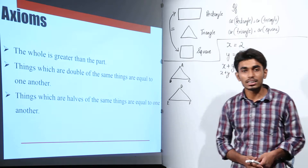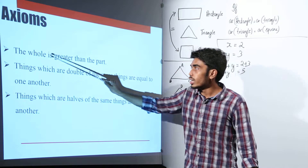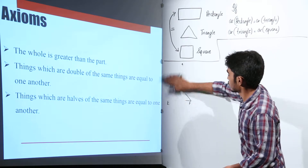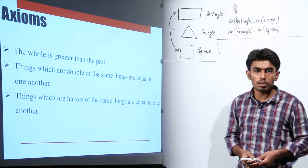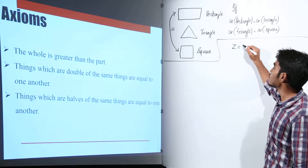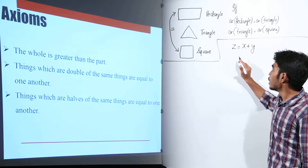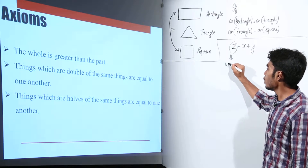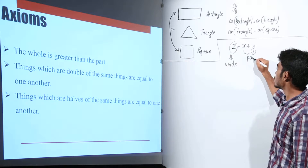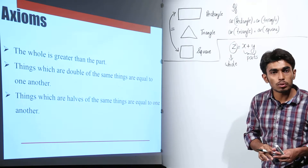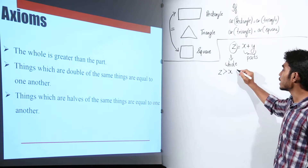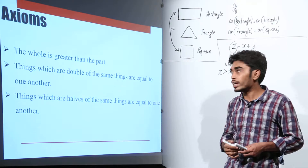The next axiom is very simple: the whole is greater than the part. For example, if z equals x plus y, then z is the whole and x and y are the parts. So I can definitely say that z is greater than x, and z is greater than y — the whole will always be greater than its parts.